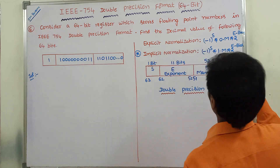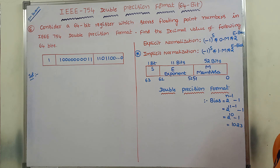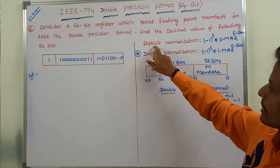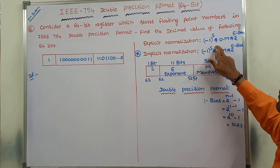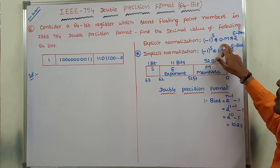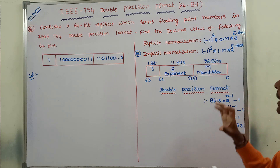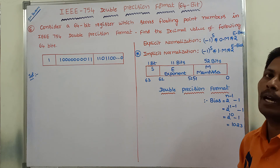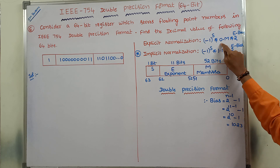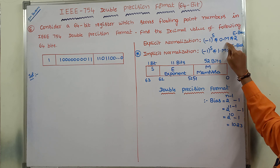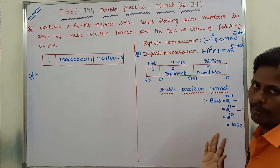In the case of explicit normalization, the formula is: (-1)^S × 0.M × 2^(E - bias). The only difference between the two types of normalization is that implicit normalization uses 1.M, while explicit normalization uses 0.M. The remaining things are similar.